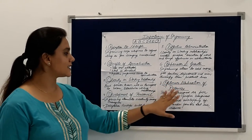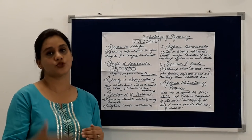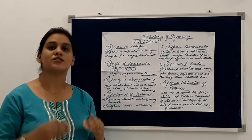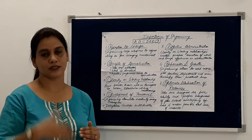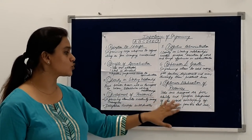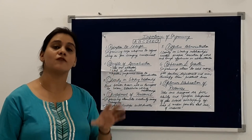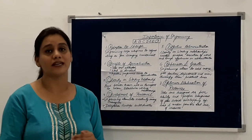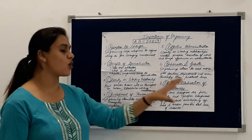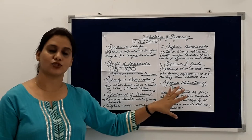The last one is optimum utilization of resources. When we are assigning jobs to employees as per the department, it is kept in mind that jobs are assigned as per the ability of the employees. Proper assignment of jobs avoids overlapping of work and makes possible the best use of resources, because there is no overlapping and those doing the work are doing it in the best way — that is why there is optimum utilization of resources.